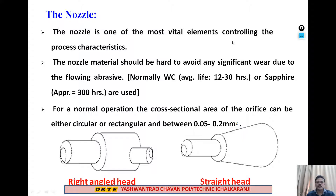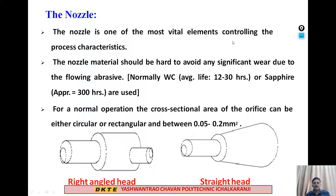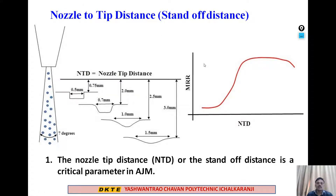The nozzle material should be hard to avoid any significant wear due to the flowing abrasive particles. As abrasive particles pass through the nozzle, their sharp edges cause internal wear of the nozzle. Using sapphire material, the nozzle can last approximately 300 hours. For normal operation, the cross-sectional area of the orifice can be either circular or rectangular, with area between 0.05 to 0.2 mm².